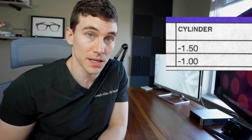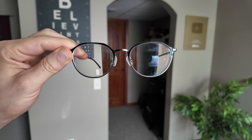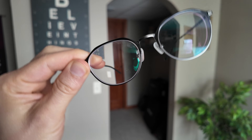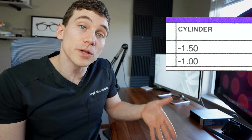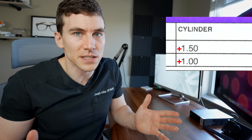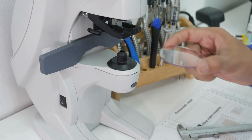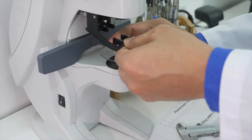One thing that can be a little confusing about the cylinder power is the sign in front of it. It usually should have either a plus or a minus sign. Most doctors will probably write this with a minus sign in front of the cylinder power, because that's how glasses are manufactured — in what we call minus cylinder form. Occasionally, doctors will write the prescription with a plus symbol in front of the cylinder power. That's fine, because opticians, or whoever's making your glasses, will do some simple math to convert it back to minus cylinder form. Unless you're making glasses, I wouldn't worry about that plus or minus symbol in the cylinder power.